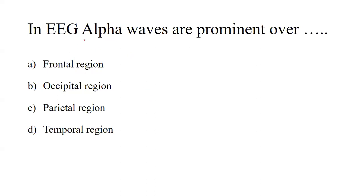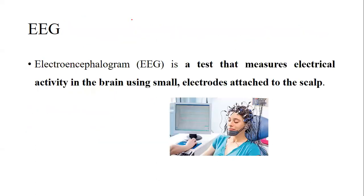Our next question: in EEG, alpha waves are prominent over which region? The options are frontal region, occipital region, parietal region, and temporal region. EEG stands for electroencephalogram — it is a test that measures electrical activity in the brain using small electrodes attached to the scalp.